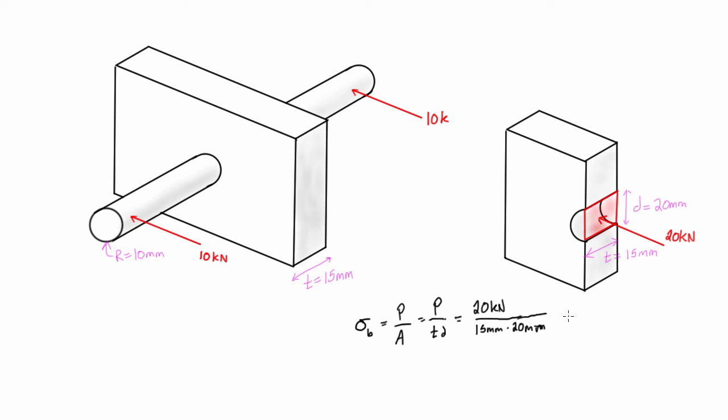And this works out to be 0.0667 kilonewtons per millimeters squared.